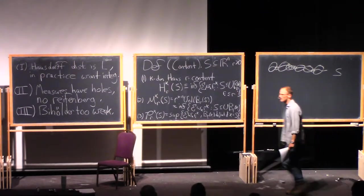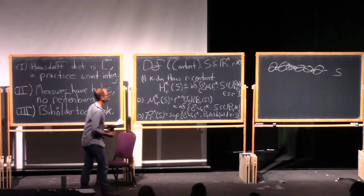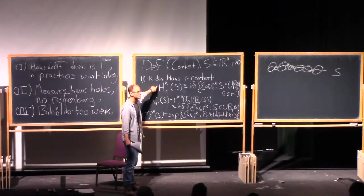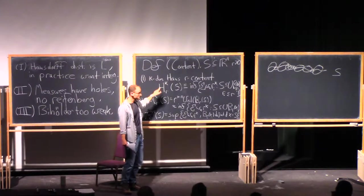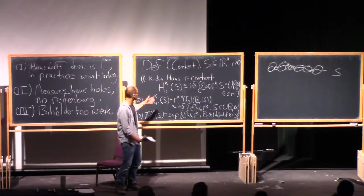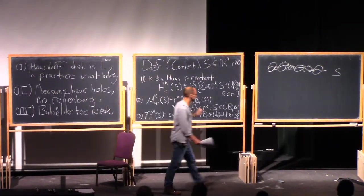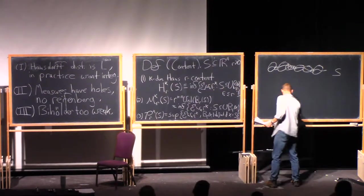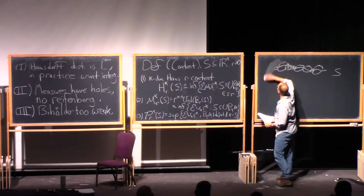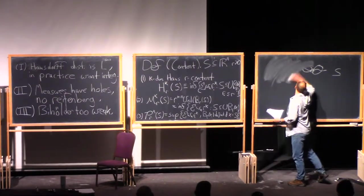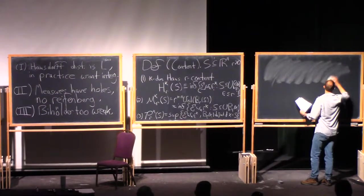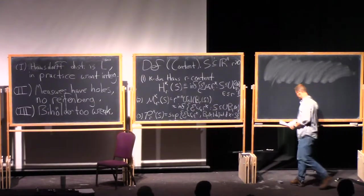And let's just do one example to see this. So let's let S be the rationals inside the ball of radius one.